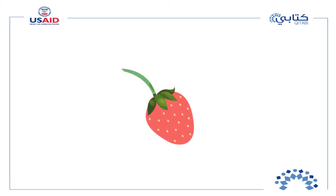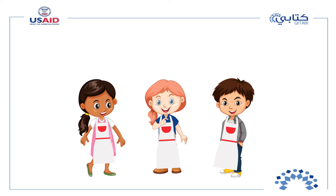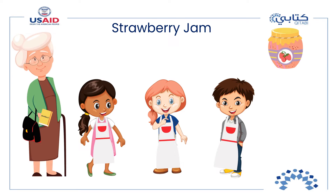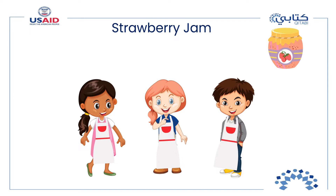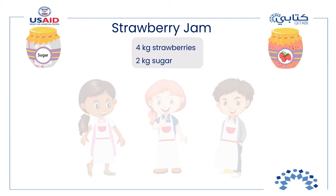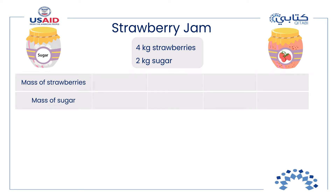Put on your kitchen apron — it's strawberry season! My cousins Charlotte, Sam, and I will make strawberry jam, each at our own homes. My grandmother gave us her cookbook to help. Under the strawberry jam recipe, it is written that for each four kilograms of strawberries, two kilograms of sugar are needed. If I have twelve kilograms of strawberries, Charlotte has two kilograms, and Sam has one kilogram, how much sugar does each one of us need?